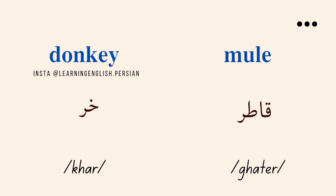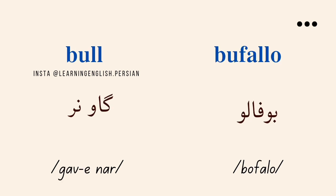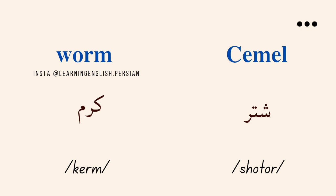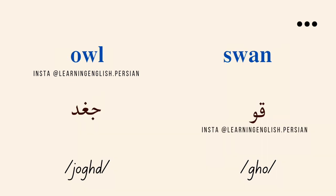Donkey. Khar. Mule. Goatir. Buffalo. Worm Kerb. Camel. Shator. Owl. Chogd. Swan. Goatir.